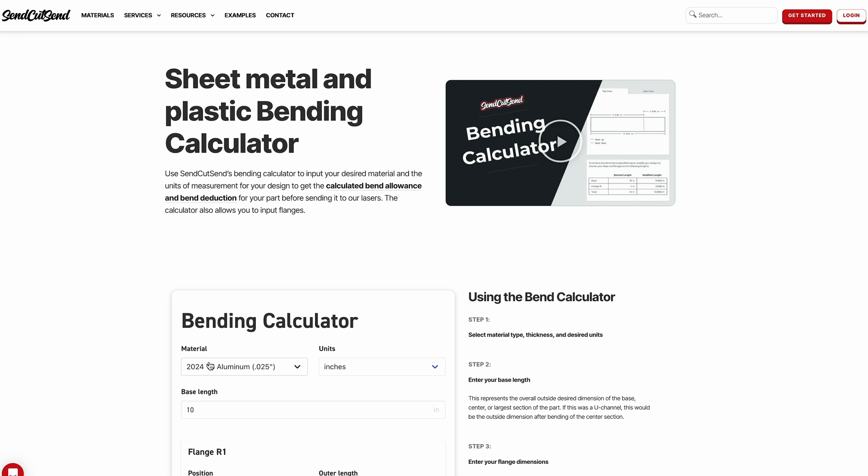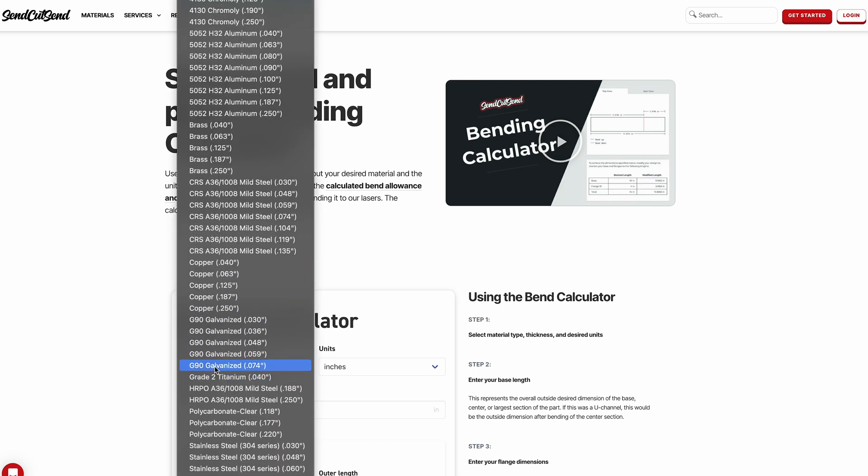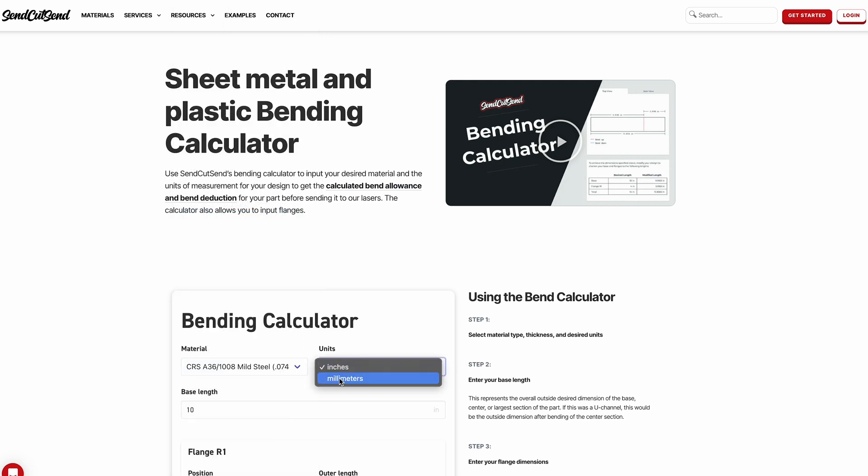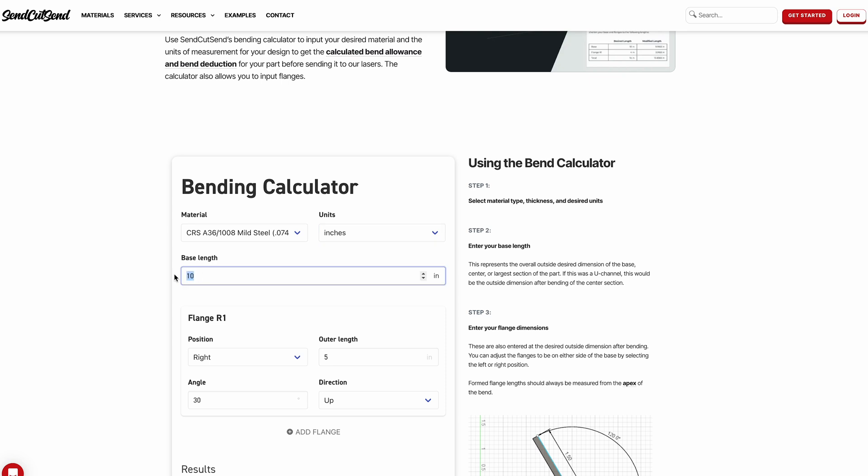So step one we're going to be selecting the material, the thickness, the units, the angle, all of that kind of stuff we're going to be selecting in the background. The next one is in step two we're going to be going over the base length. We're going to enter the base length and the unit that you provided in step one.